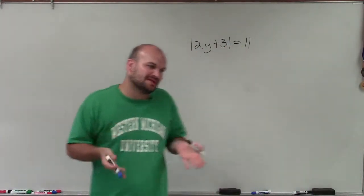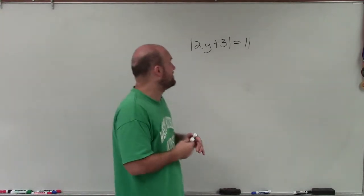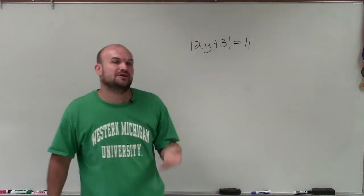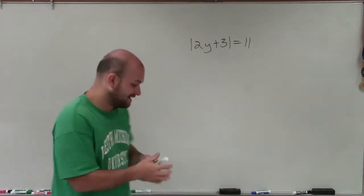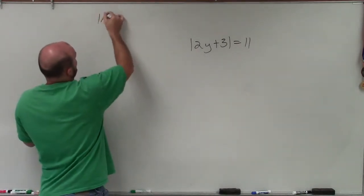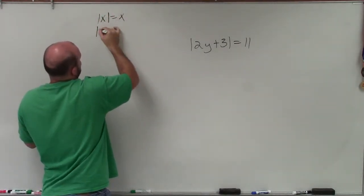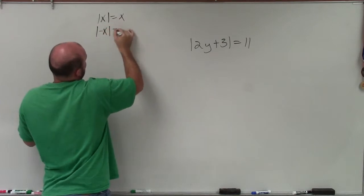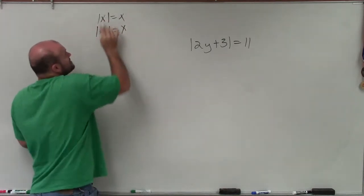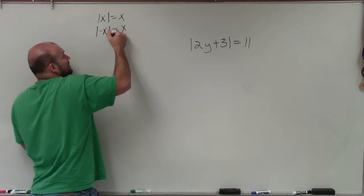To do that, remember, when we're looking at solving absolute value equations, we've got to understand that the value inside the absolute value could be positive, or it also could be negative. Look at my case in point: the absolute value of x is equal to x, and the absolute value of negative x is also equal to x. So therefore, it doesn't matter if my variable is positive or negative.